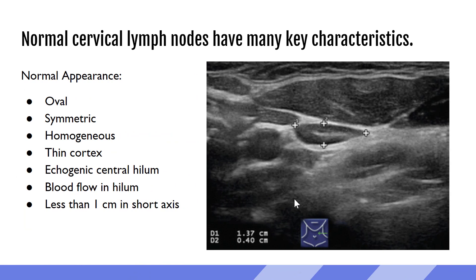Normal cervical lymph nodes have many key characteristics. This includes taking on more of an oval shape as opposed to round. We're looking for them to be more symmetrical — do they have an even cortex that's thin and homogenous all the way around? We also want to identify a very central echogenic hilum. We're going to use color flow on any lymph nodes we are evaluating, hoping to see just one artery and one vein coming into the hilum. When we measure on the short axis, we expect them to be less than one centimeter in width. Here we have an example of a very normal appearing lymph node in the neck.